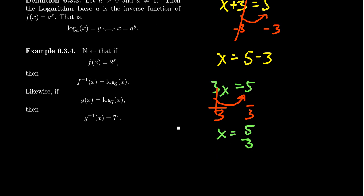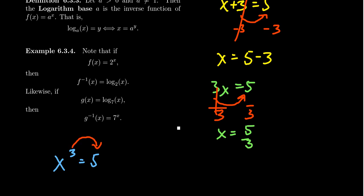Let's try this one more time. Consider the equation x cubed equals five — or x caret three, as you'd write on a calculator. The operation in play is the exponent. The same idea holds: if you want to solve for x, we have to move the three to the other side. We have to perform some operation to both sides to preserve equality, and we apply the inverse operation. If you're taking the power of three, the inverse operation is the cube root. We take the cube root of both sides and get x equals the cube root of five.